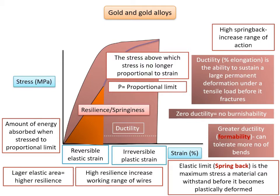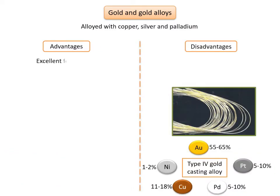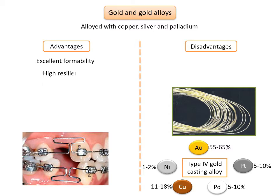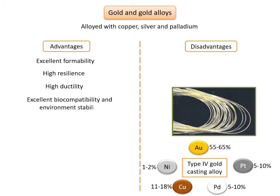Returning to gold and gold alloys, the advantages are excellent formability and high resilience, which provide ease in bending wires into loops, coils, and stops without fracturing. Gold also has high ductility, allowing cold working without fracture. It has excellent biocompatibility and environmental stability — it is resistant to corrosion and has increased tissue tolerance, which are desired properties for wires placed in the patient's mouth. The disadvantages are low spring back and high cost.